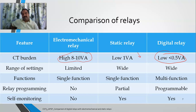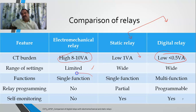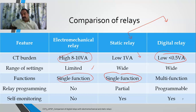Regarding the range of settings: digital relays offer a very wide range of settings, whereas electromechanical relays have a very limited range of settings and limited functions — mostly single function. Static relays are also mostly single function. Digital relays, which use microprocessors with dedicated memory and advanced microprocessors, offer very high multifunctionality.